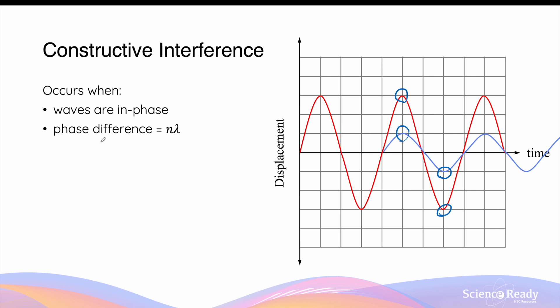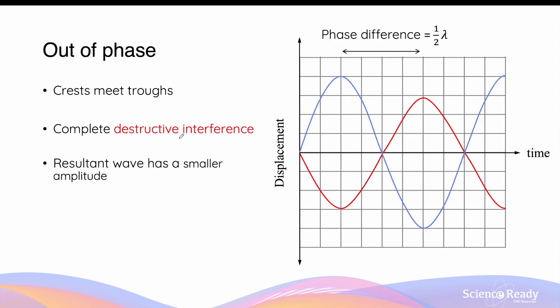It's very important to remember that constructive interference will occur whenever the phase difference is a multiple of lambda between the two waves. Now let's talk about when waves are out of phase. When waves are out of phase, what this means is that the crest meets the trough. As we saw earlier, this is where the waves' amplitudes will negate and cancel each other out to give you destructive interference.